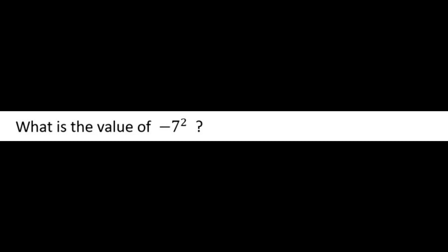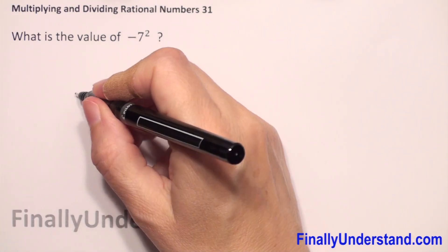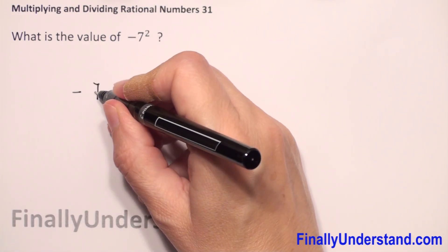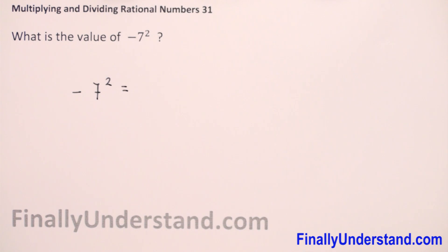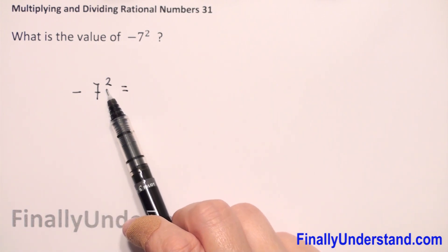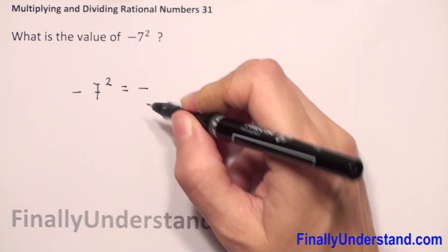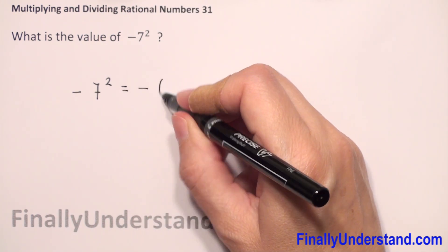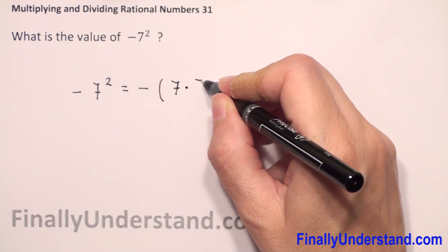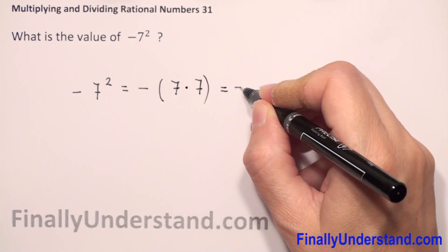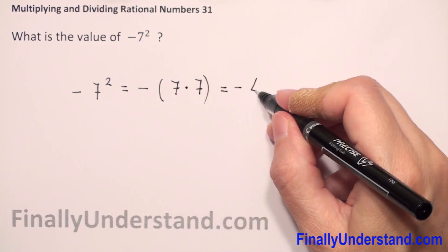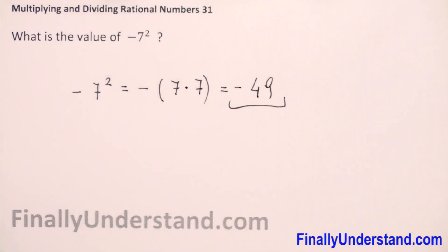What is the value of negative seven to the second power? We copy the negative sign and we have seven to the second power. First, we always have to do the power. We can rewrite seven to the second power as seven times seven. Seven times seven is 49, so we get negative 49. That is the solution.